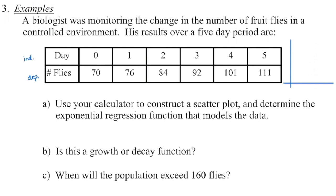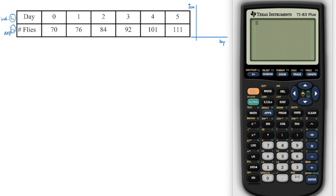We're going to go over to our graph, do a sketch, and label it: day on the x-axis and number of flies on the y-axis. That means when we enter this into the calculator, the days will go into list one and the number of flies will be entered into list two. Grab your calculator and we're going to try this together, getting practice inputting the data.